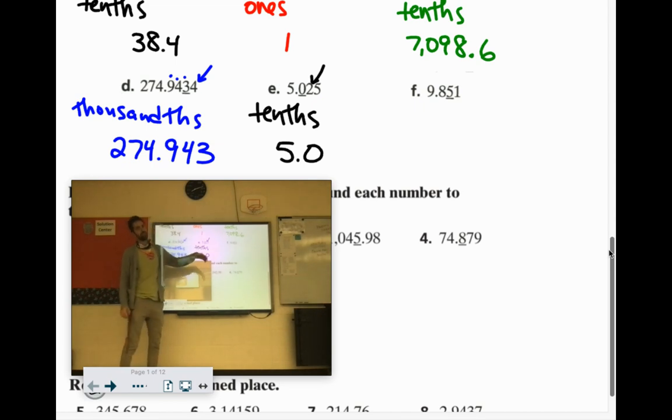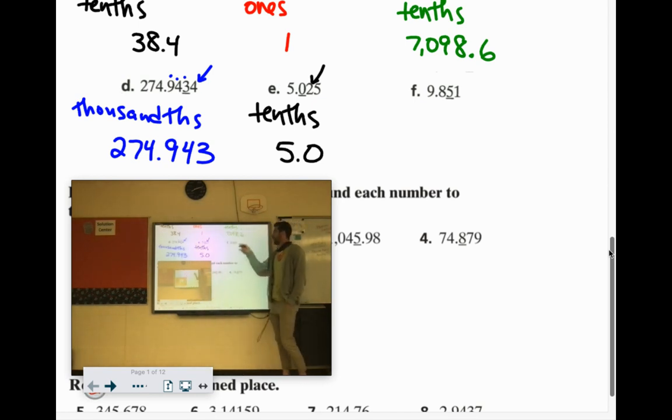Now, you would think 5.0 is just 5. But it tells us to round to the nearest tenth. So we're going to actually write it to the tenth. We're going to keep it 5.0 instead of just 5. 9.851. This is the hundredths place. And behind the 5 is a 1. So we're just going to keep it 9.85.